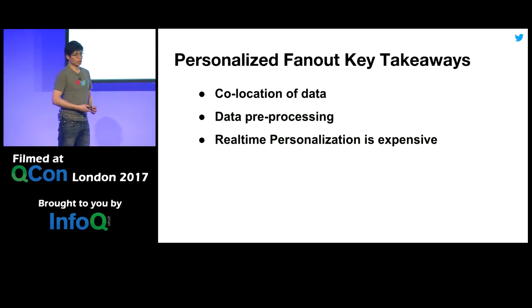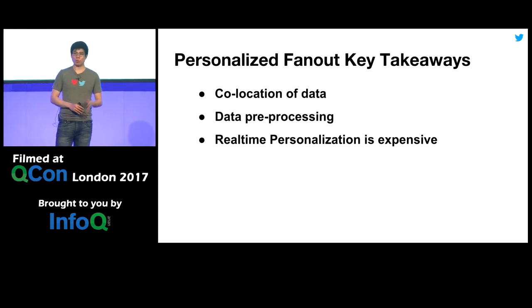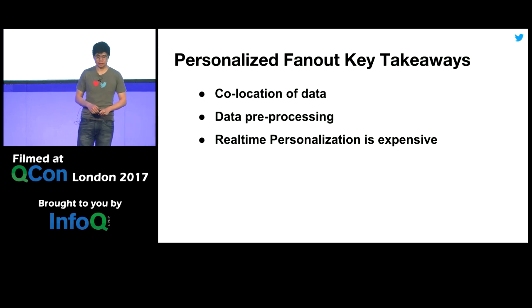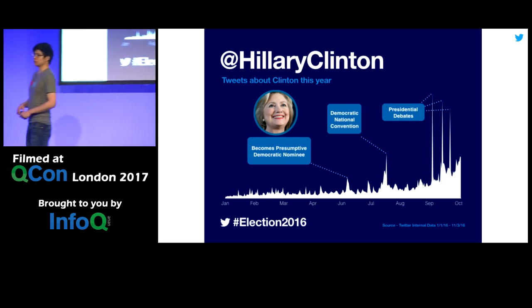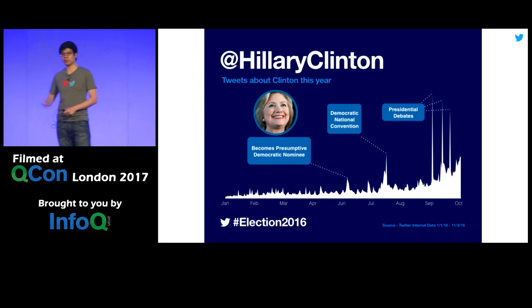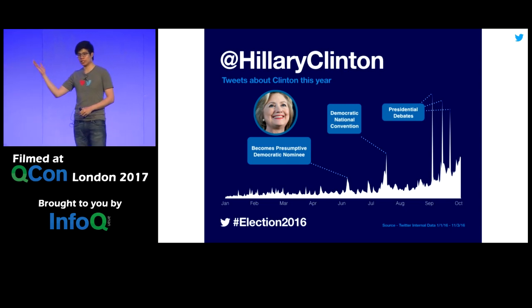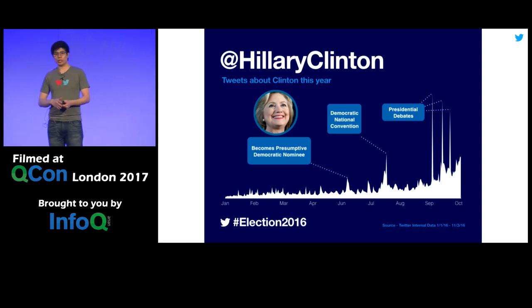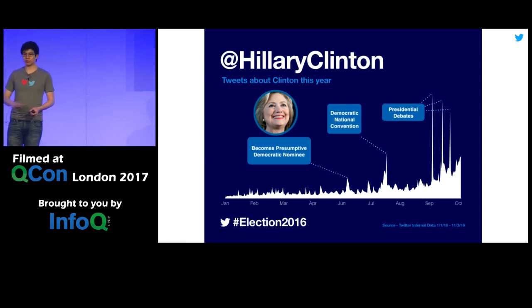Key takeaways for personalized fanout: co-locate your data to eliminate external network lookups, which enables horizontal scaling. But to do this efficiently, you must rely on data preprocessing — pre-process your engagements efficiently and partition your followings graph correctly. The third key takeaway: real-time personalization is actually very expensive. It impacts iteration speed because anyone with a new idea must first write a preprocessing pipeline. And listening to the firehose is inherently spiky — during events like Hillary Clinton's Democratic nomination, mentions spiked many times average volume. So we must over-allocate capacity to handle these unpredictable spikes, wasting resources.